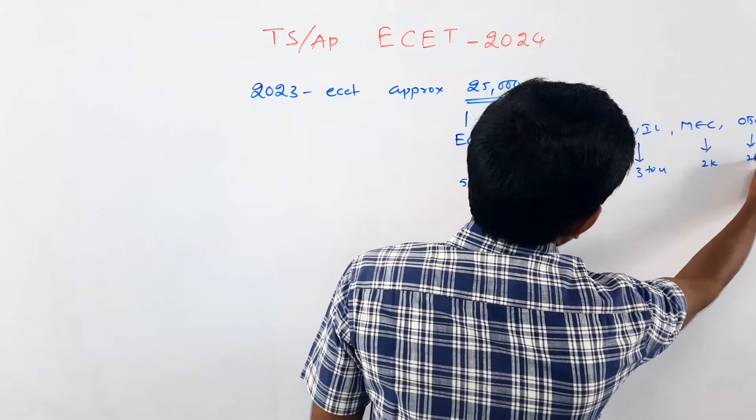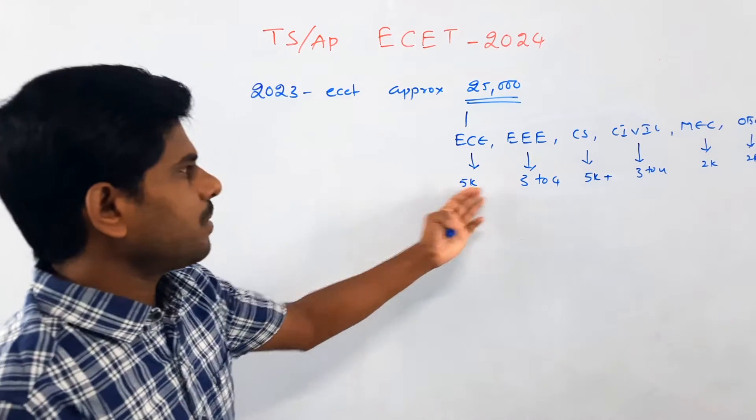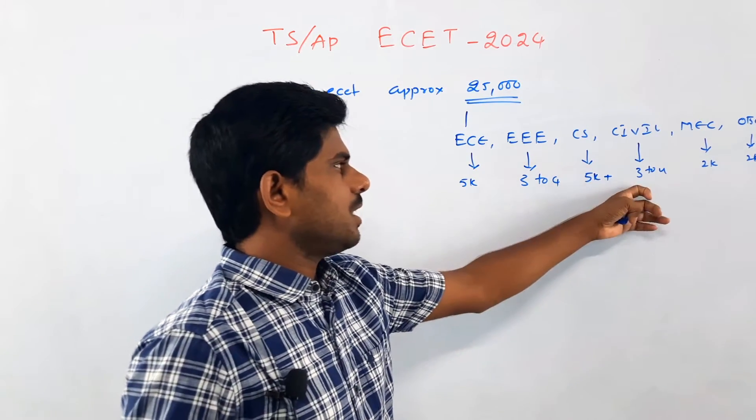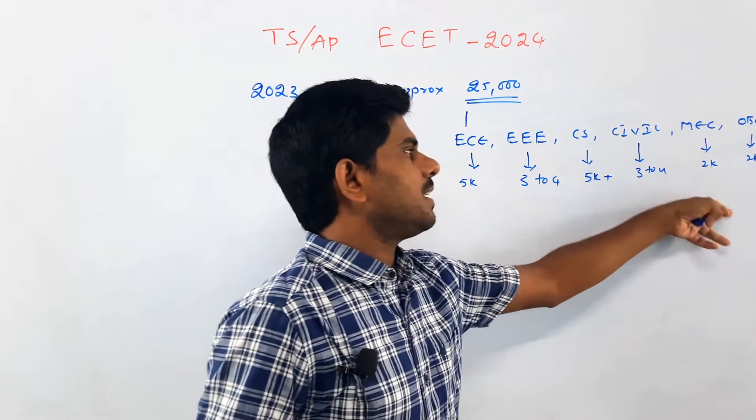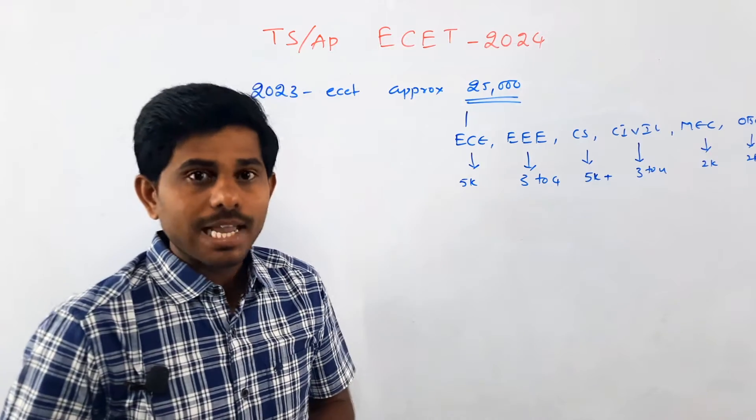This is the second branch. Let's count: 5 plus 5 is 10, 16, 17, 18, 19, 20. Here we have 20. We have a rough diagram.